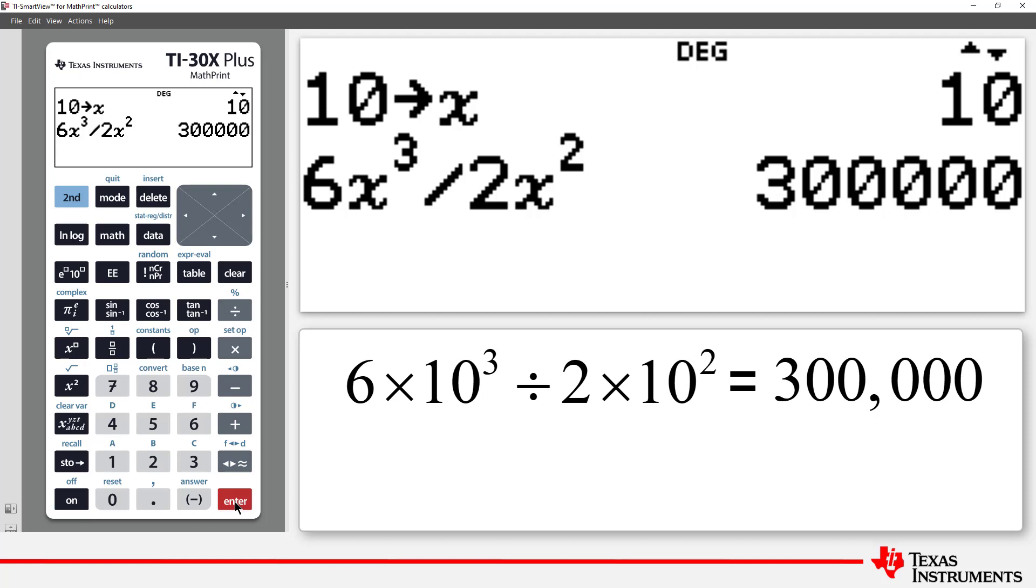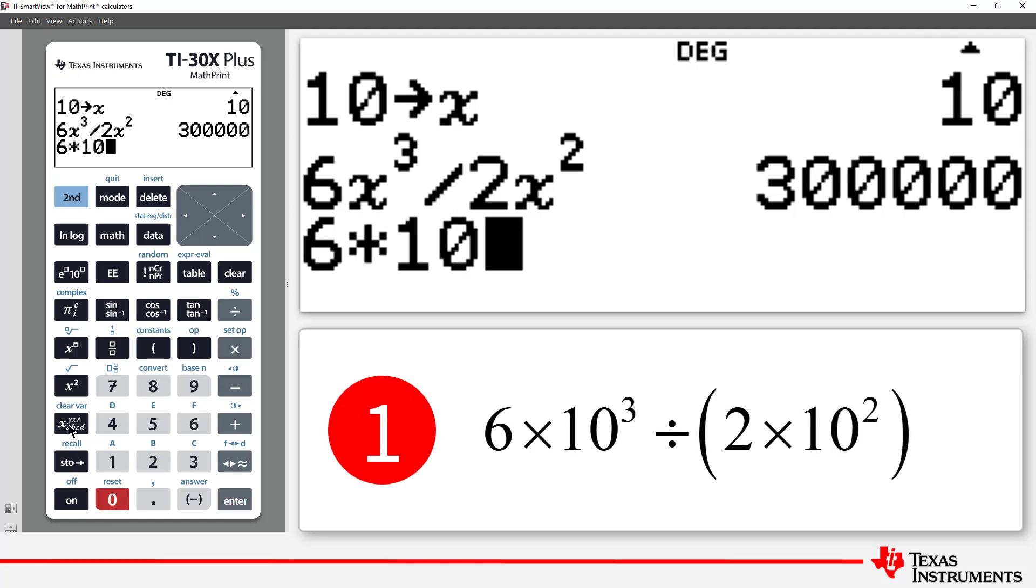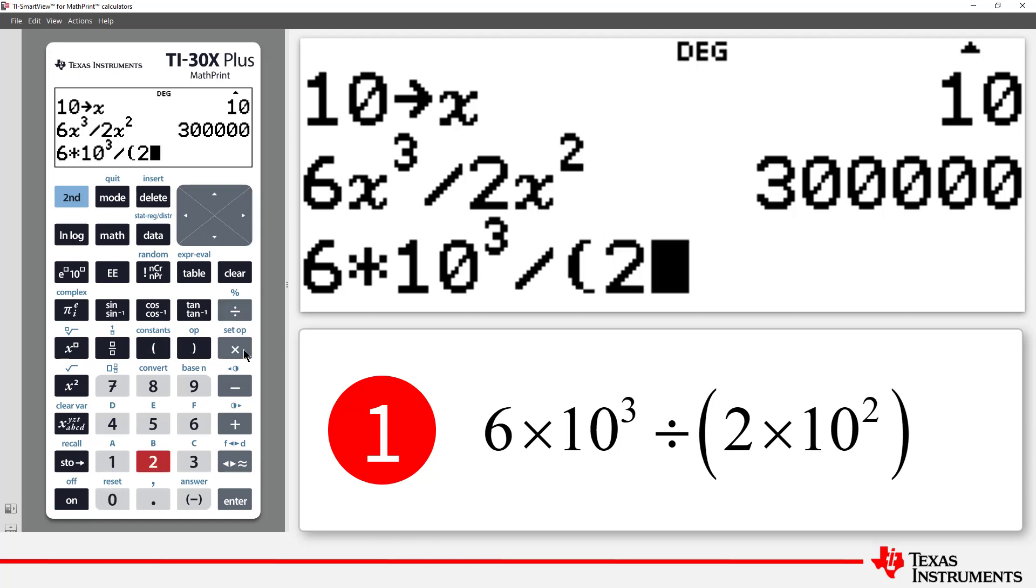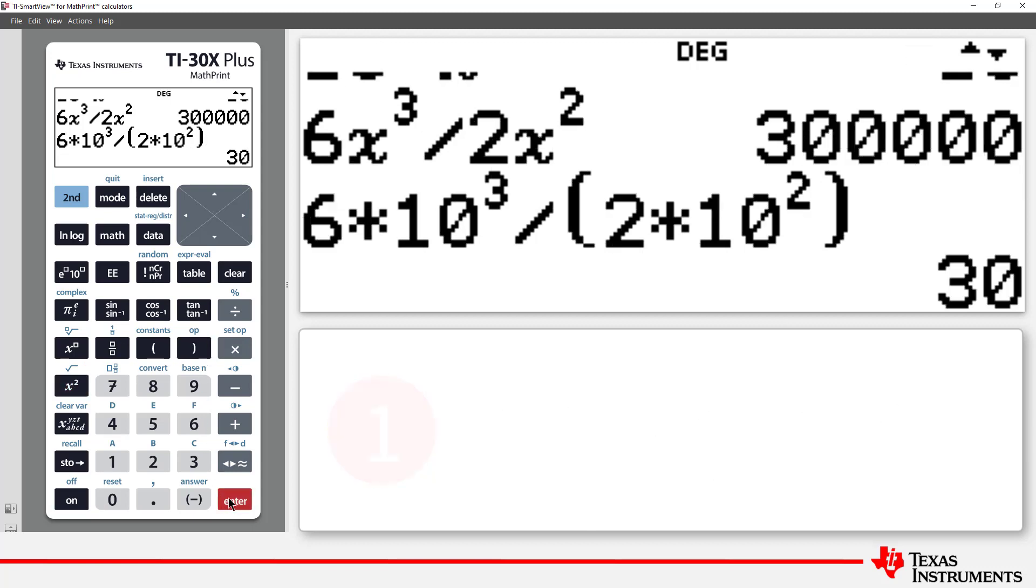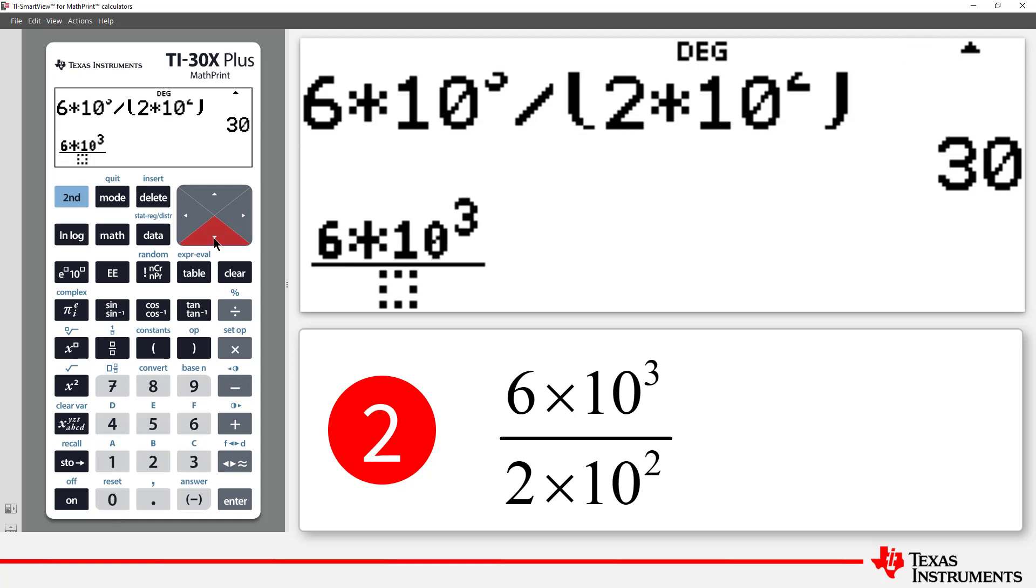Here are the options when working with scientific notation. Option 1: Use parentheses. Option 2: Use the vinculum and the two-dimensional editor in the TI-30X Plus MathPrint calculator.